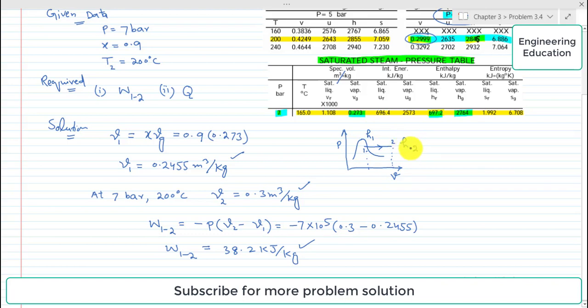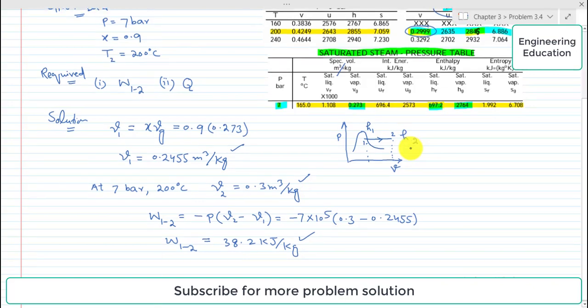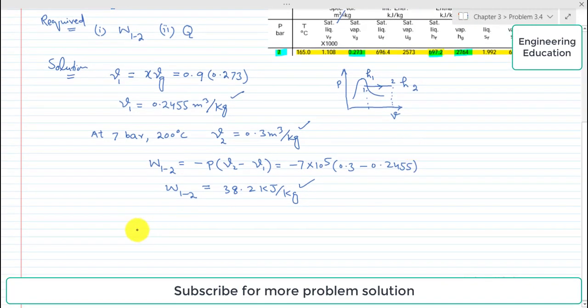So for state 1, to find the value of h1, it is simply equal to hf plus x times hfg. Also, we can write this expression like hf plus x times (hg minus hf).